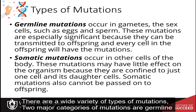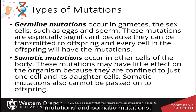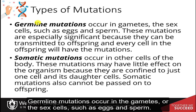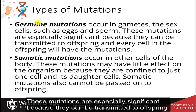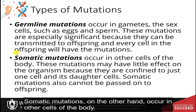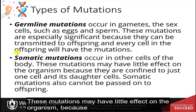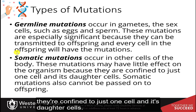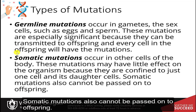There are a wide variety of types of mutations. Two major categories are germline mutations and somatic mutations. Germline mutations occur in the gametes or the sex cells, such as eggs and sperm. These mutations are especially significant because they can be transmitted to offspring, and every cell in the offspring will then have that mutation. Somatic mutations, on the other hand, occur in other cells of the body. These mutations may have little effect on the organism because they are confined to just one cell and its daughter cells.